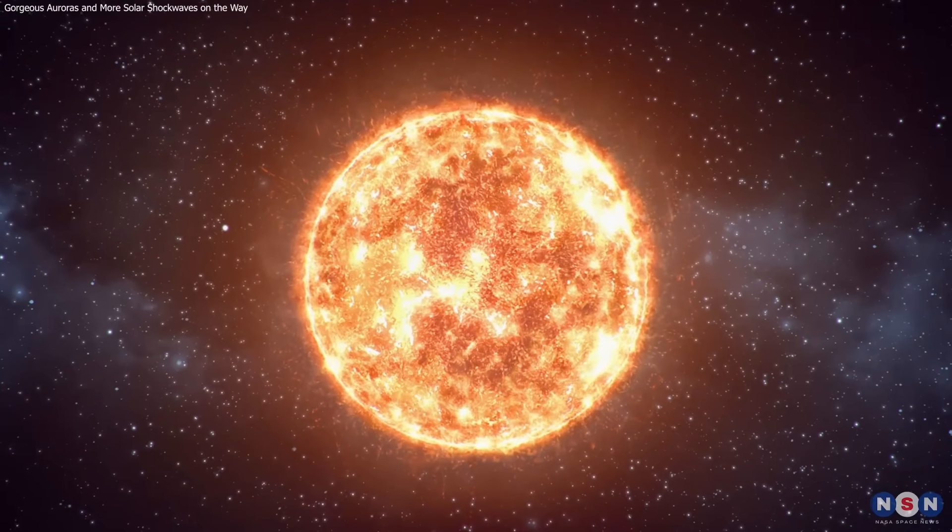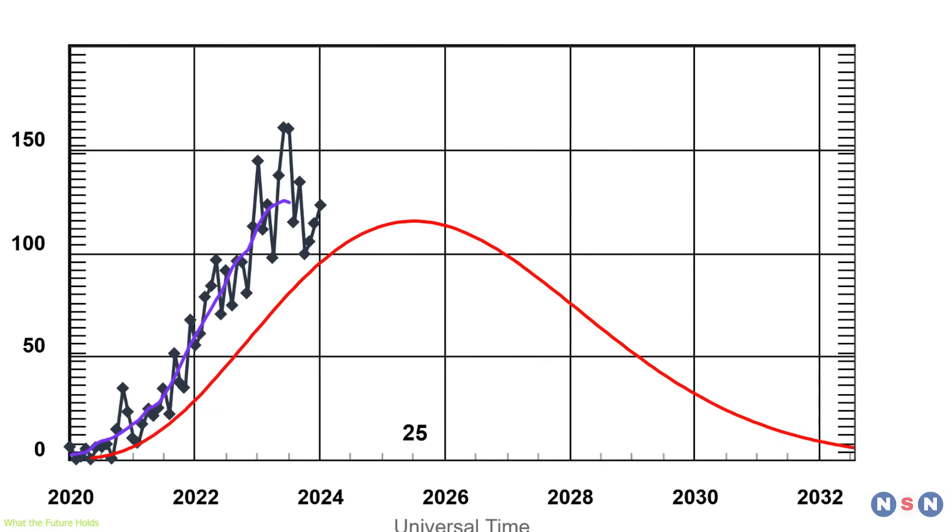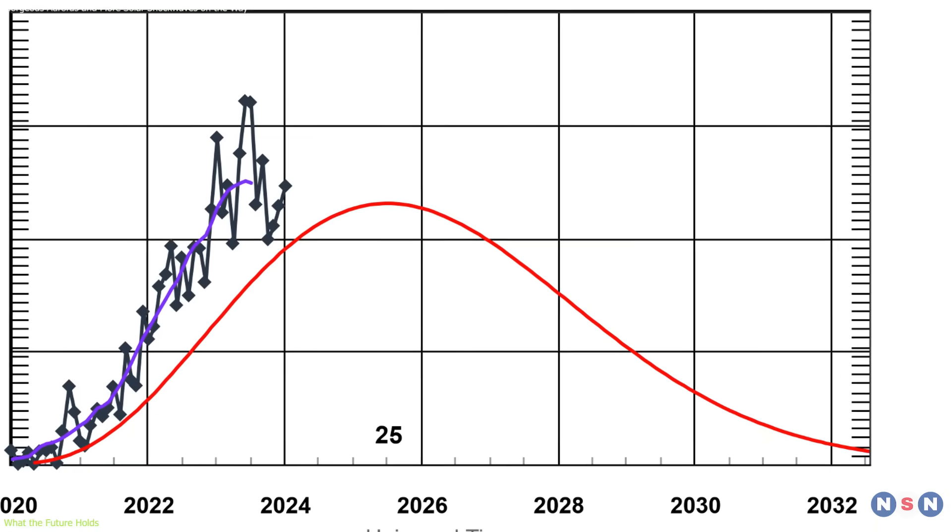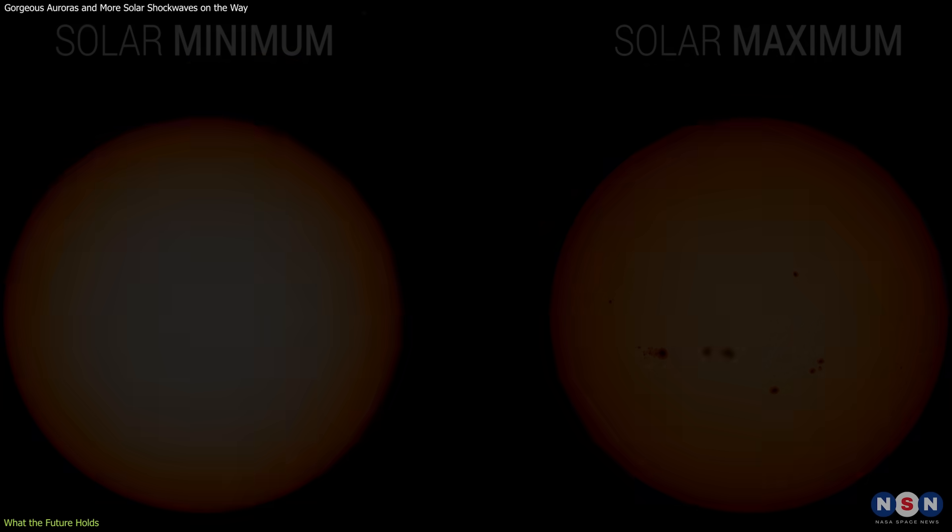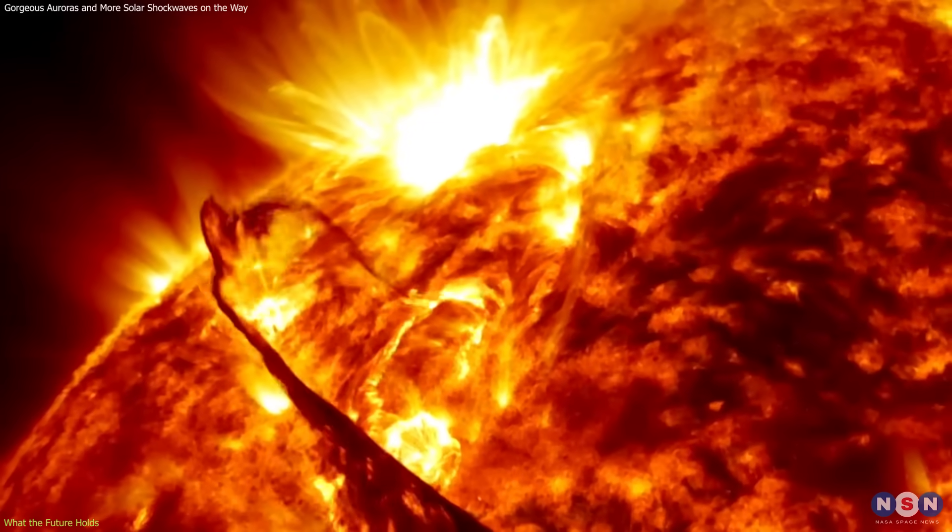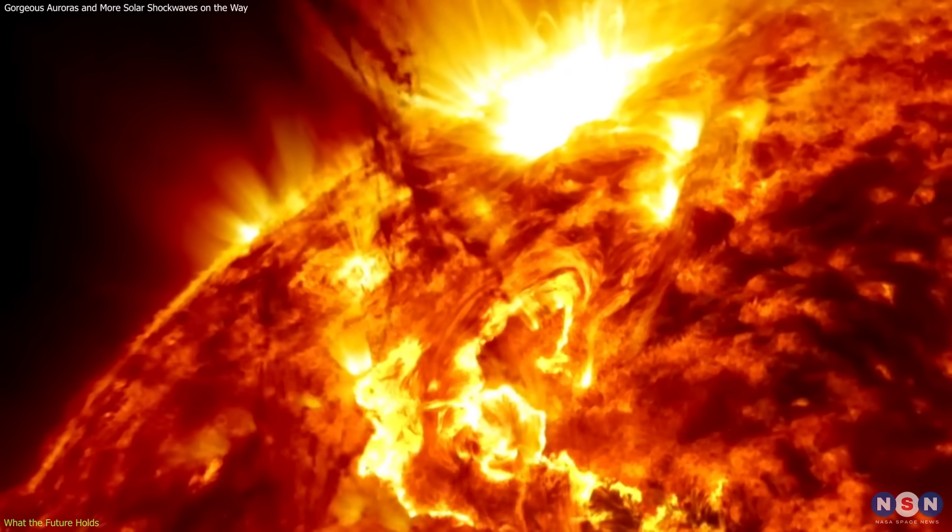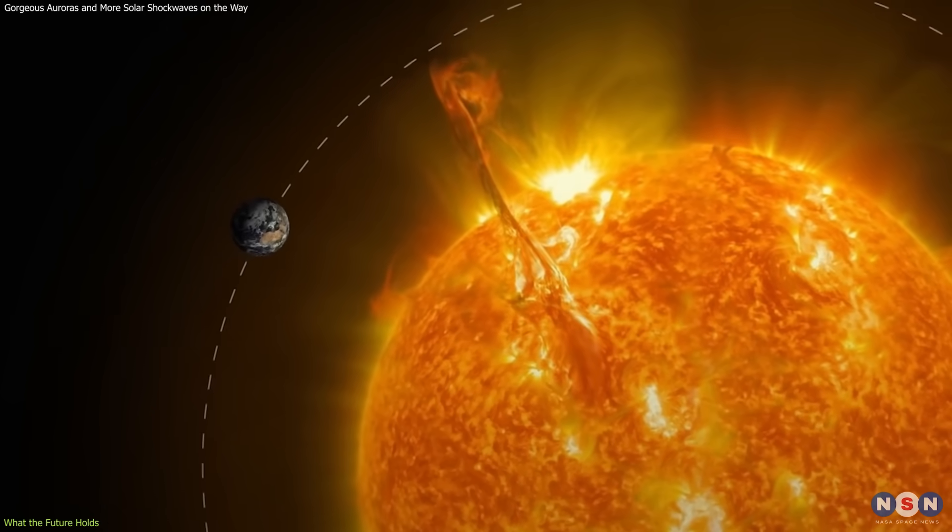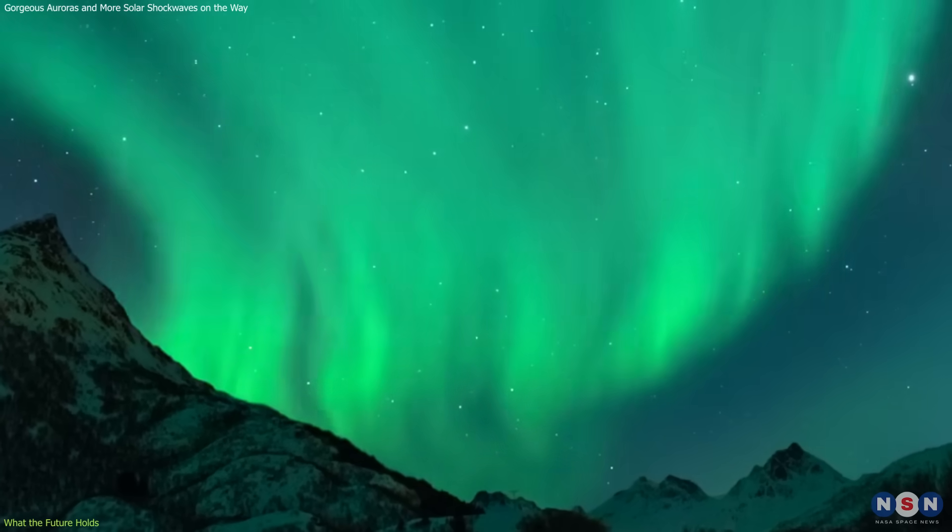As mentioned in our previous videos, our Sun undergoes an 11-year cycle characterized by periods of minimal and maximal solar activity, known as solar minimum and solar maximum, respectively. During the solar maximum, the Sun emits more solar flares and coronal mass ejections leading to more intense and frequent geomagnetic storms. These storms are the primary drivers behind the magnificent aurora displays. You can check these videos in the description.